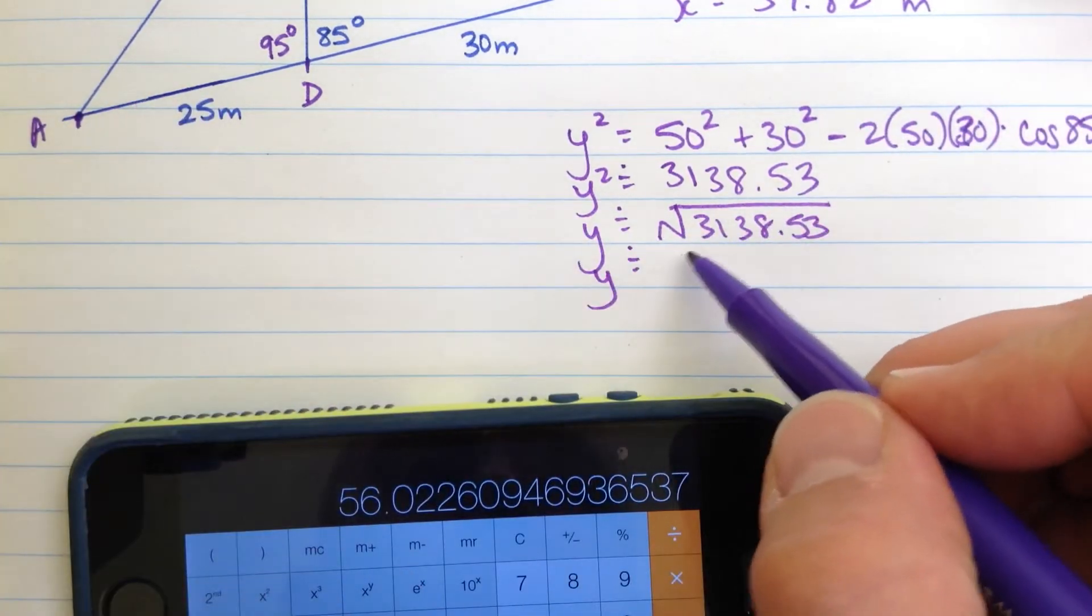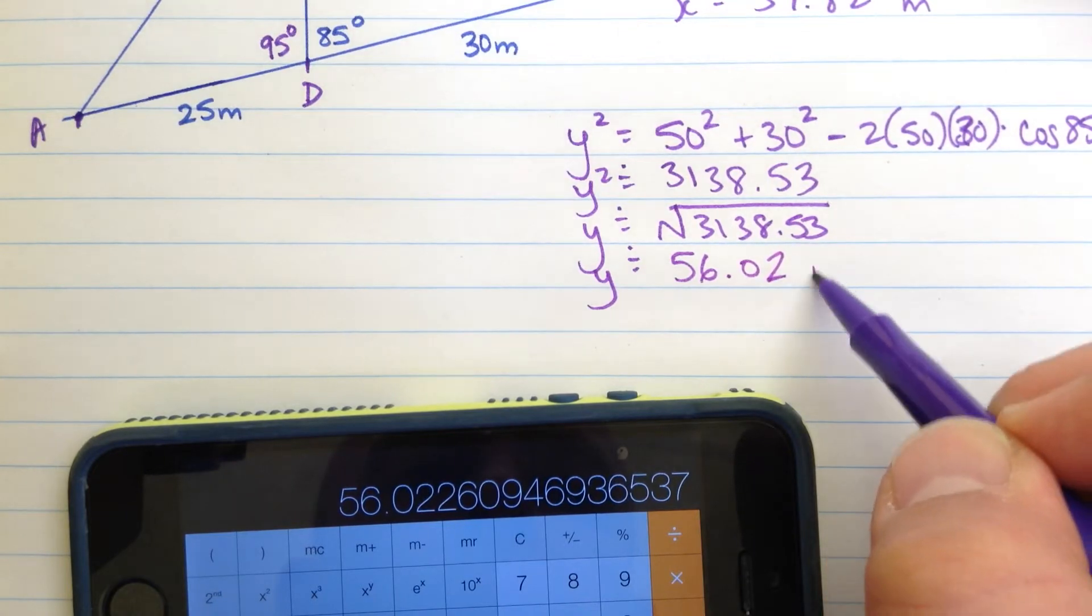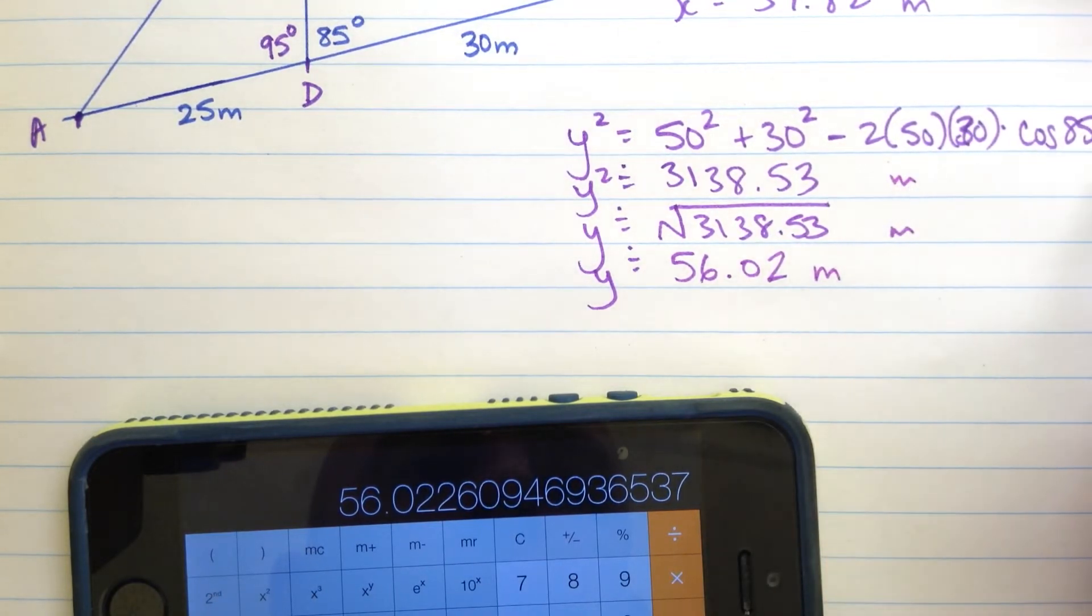And to find that then I just hit the square root button. Right there, 56. Oh, it is a little bit larger. And that again is in meters. Everything's in meters.